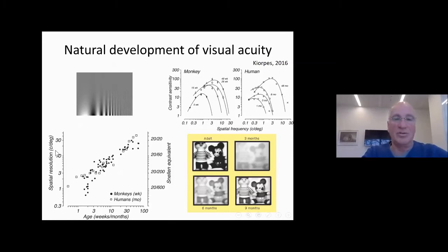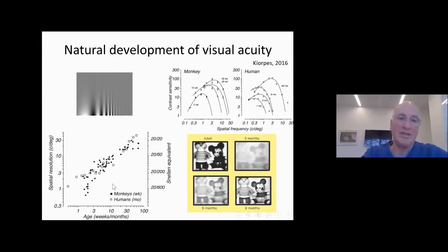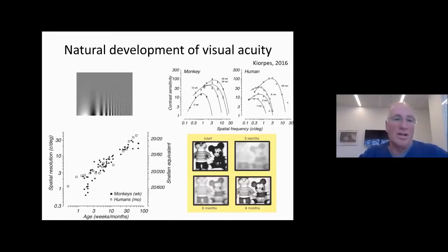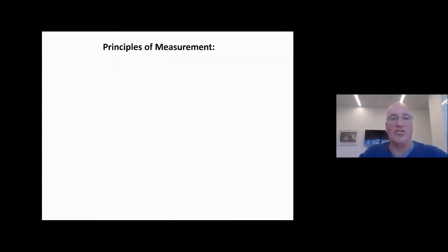You can look at the contrast sensitivity as a function of time and convert this to spatial resolution — cycles per degree increases with time, both in humans and in monkeys, not in the same timeframe, but to a similar level. This is equivalent to the Snellen visual acuity that people measure when you come to do your eye test, reaching 20/20 at about within five years or so.